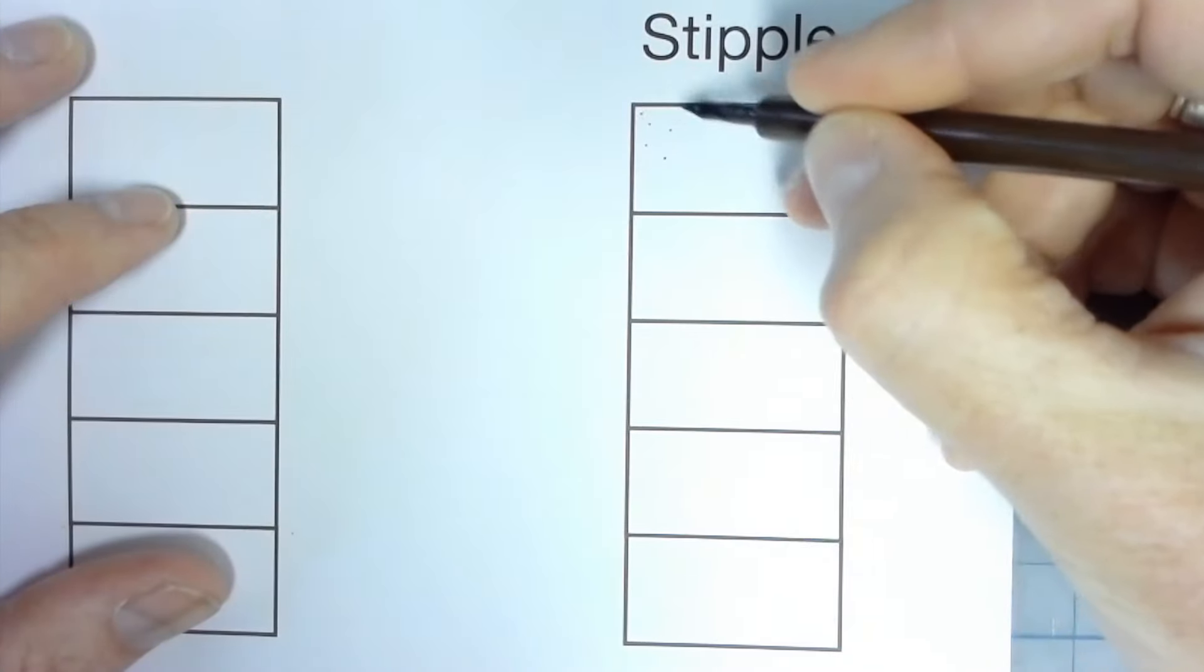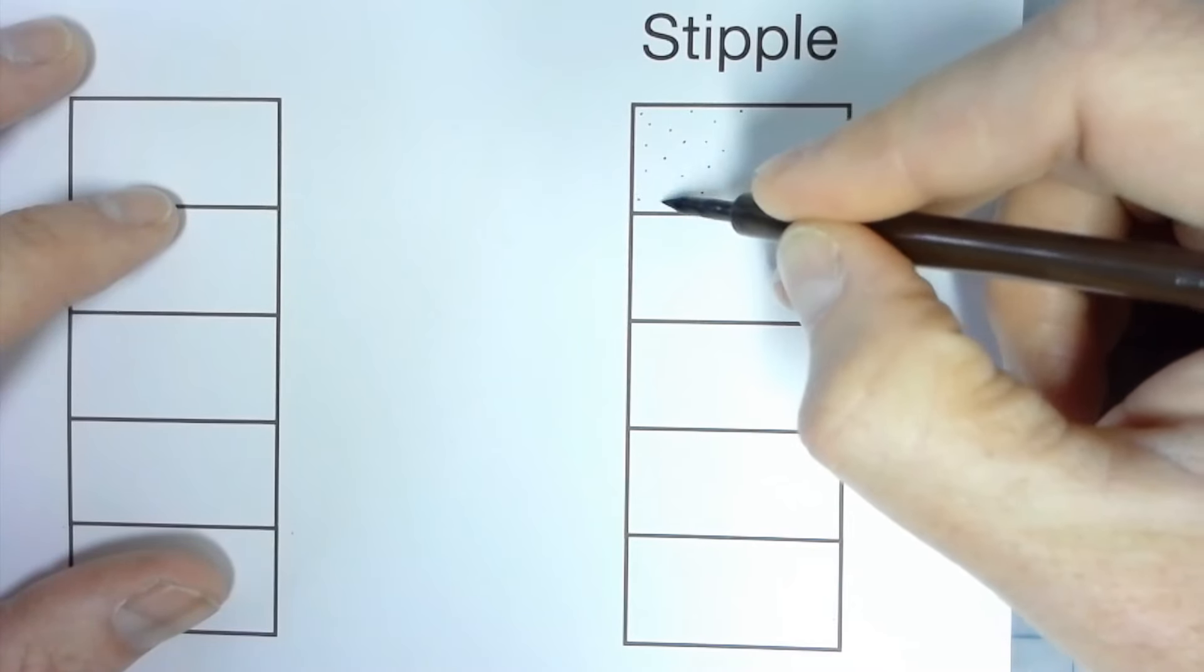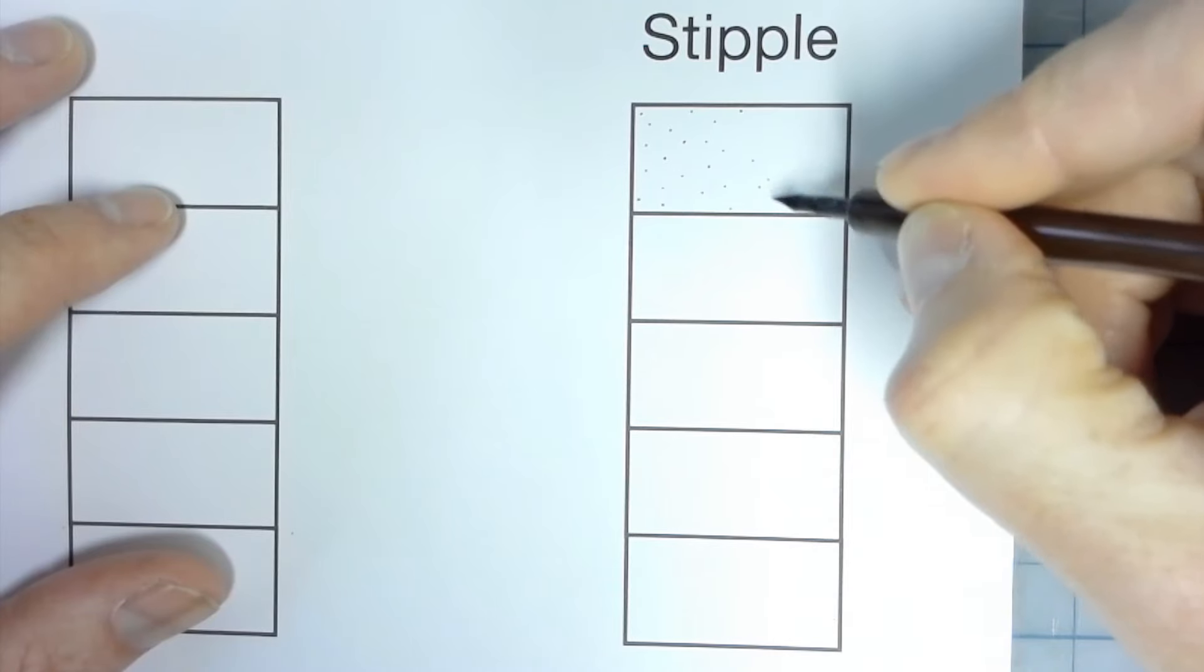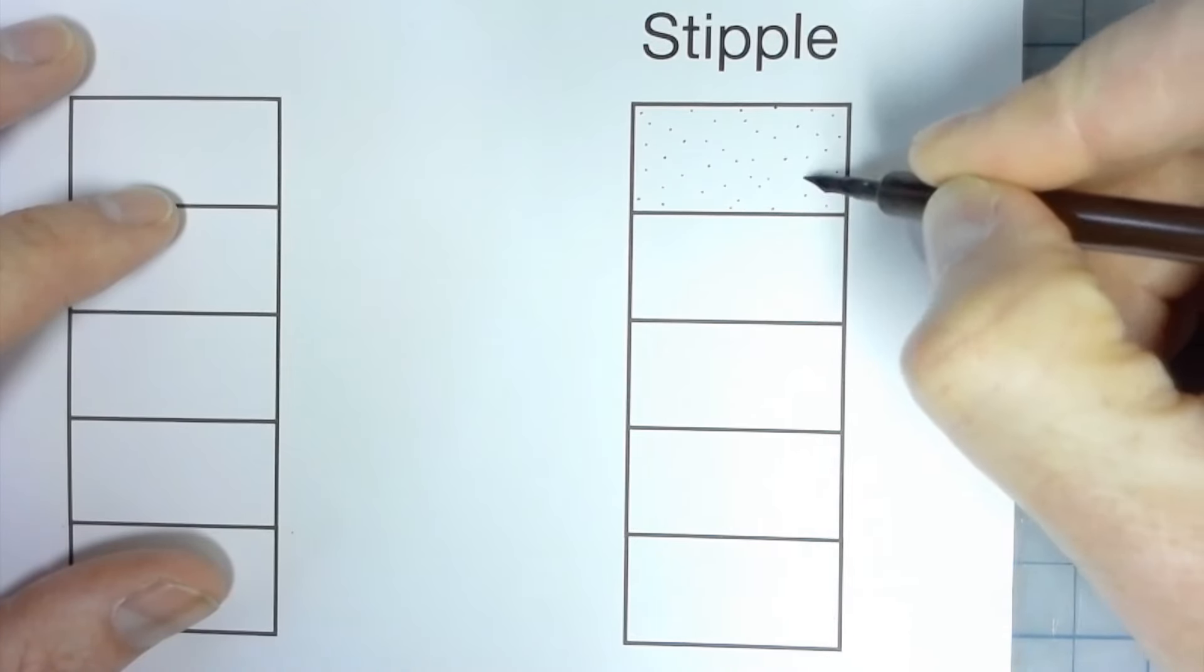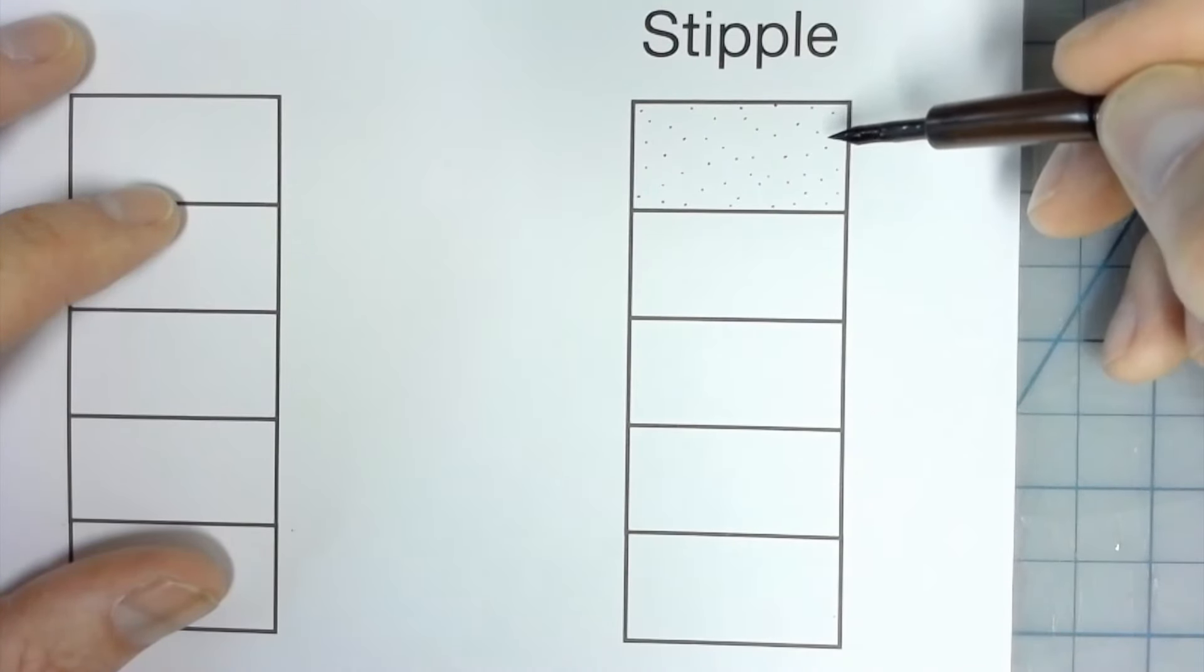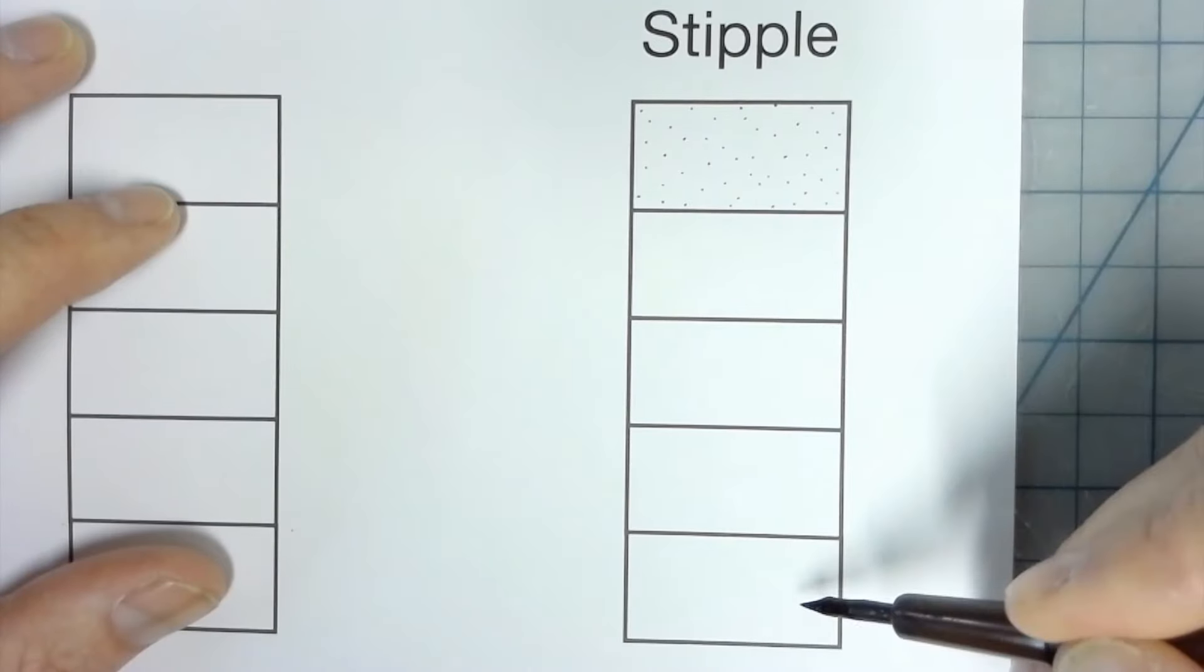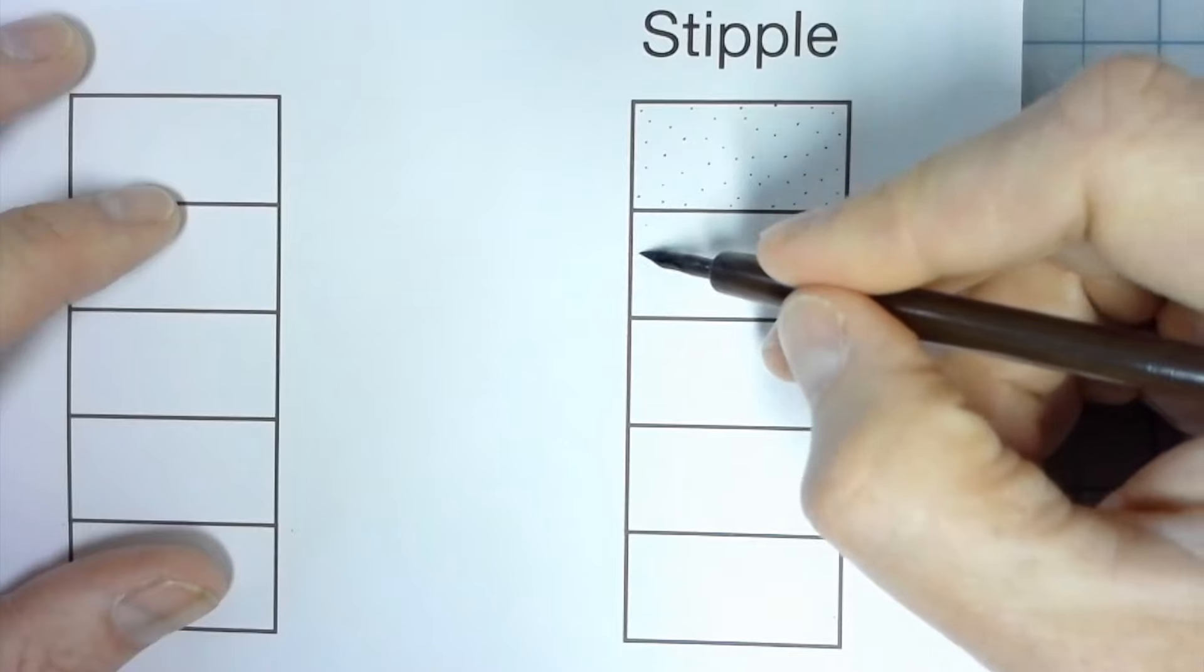First thing I want to do is just get a few randomized dots in that first box. Not dark, but not exactly too light either. To make transitions simple, I like to take my lightest value and just kind of cover all the boxes down to the darkest one before I gradually make things darker.